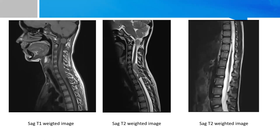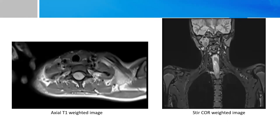On the sagittal images we can see two well-defined T1 hyperintense, T2 iso-to-hyperintense lesions in the extramedullary region of the cervical spinal cord which are causing significant mass effect over the spinal cord. In a third image there are multiple small well-defined nodular T2 hyperintense lesions at the lower thoracic and lumbar vertebral levels. On the axial T1 post-contrast image, there is significant post-contrast enhancement of the lesion causing significant mass effect over the cervical spinal cord.